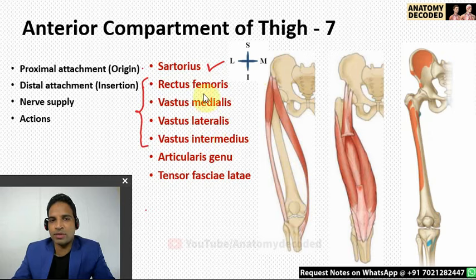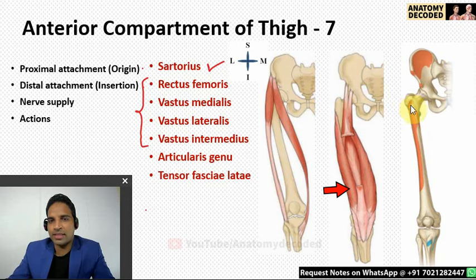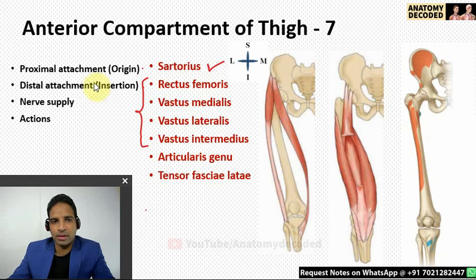For the proximal attachment of vastus medialis and vastus lateralis: near the upper aspect of the intertrochanteric line, just lateral to it, is vastus lateralis, and near the lower aspect is vastus medialis. They also have attachment on the linea aspera — the lateral lip for vastus lateralis and the medial lip for vastus medialis.